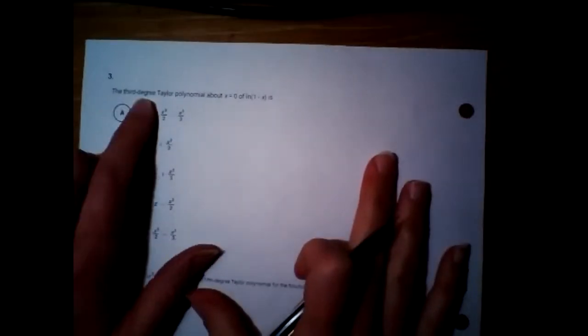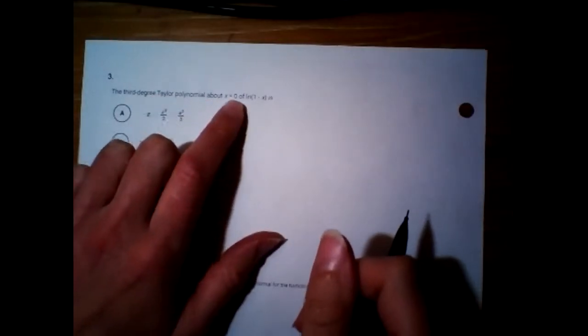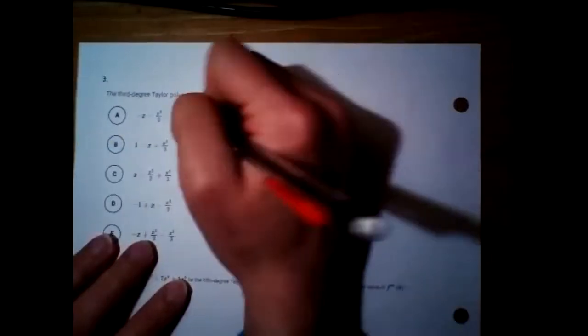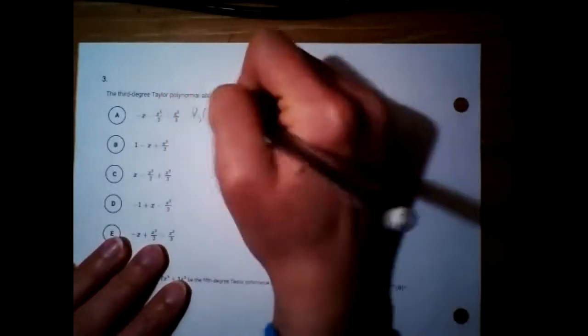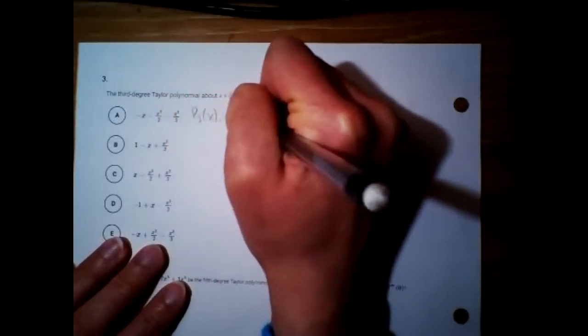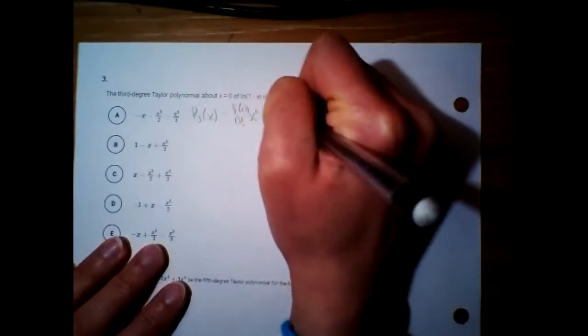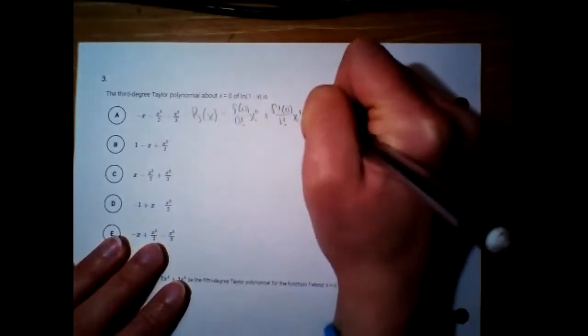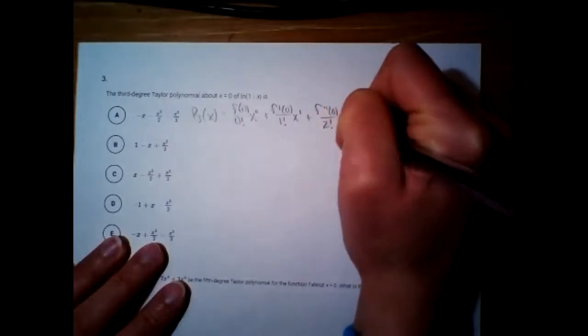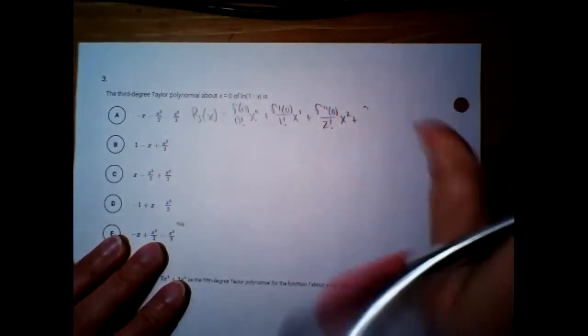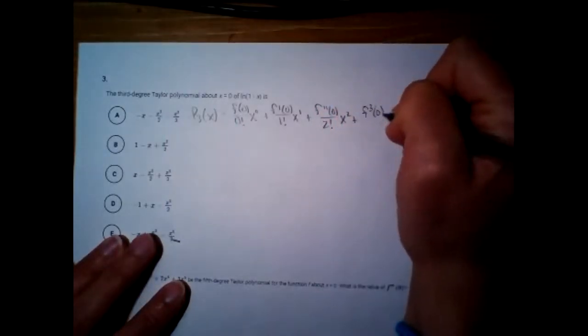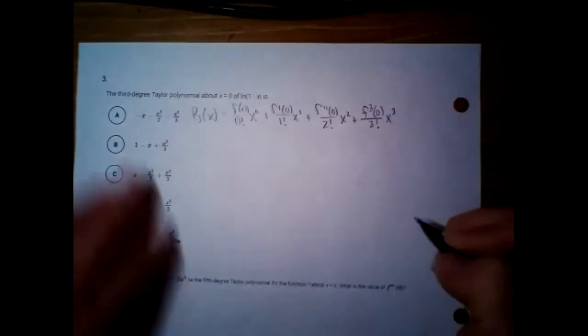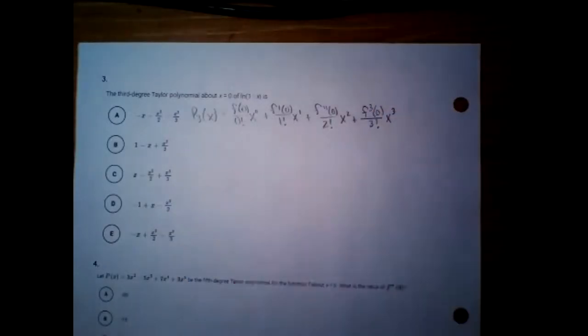Number three: we want a third degree Taylor polynomial around zero for ln(1 - x). I just note that Taylor polynomial around zero is the same as a Maclaurin polynomial. I have to write out the general form or I get confused — I have to stay organized.